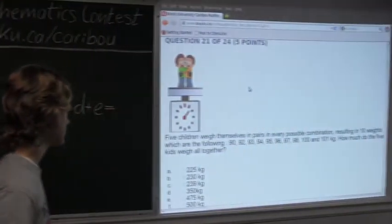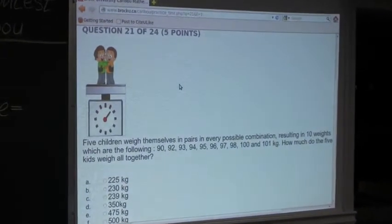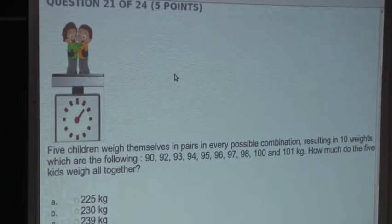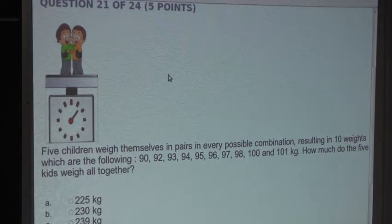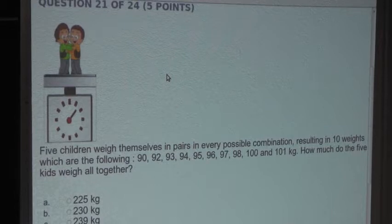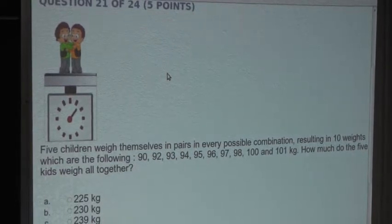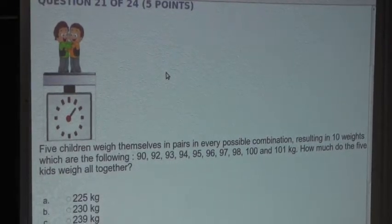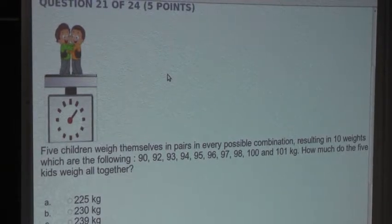So the question is: 5 children weigh themselves in pairs in every possible combination, resulting in 10 weights which are the following: 90, 92, 93, 94, 95, 96, 97, 98, 100, and 101 kg. How much do the 5 kids weigh all together?